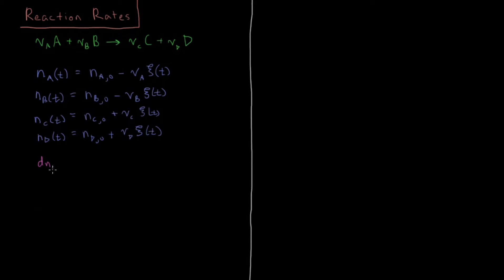So what we get is dn_A(t)/dt, change of number of moles of A with respect to time, is equal to, well the initial moles, that's a constant, that's just some value that the number of moles of A is at time equals zero. So that has no time derivative. And then C of t has a time derivative. Nu A is a constant, so we're going to have minus nu A times the derivative of our extent of reaction with respect to time.